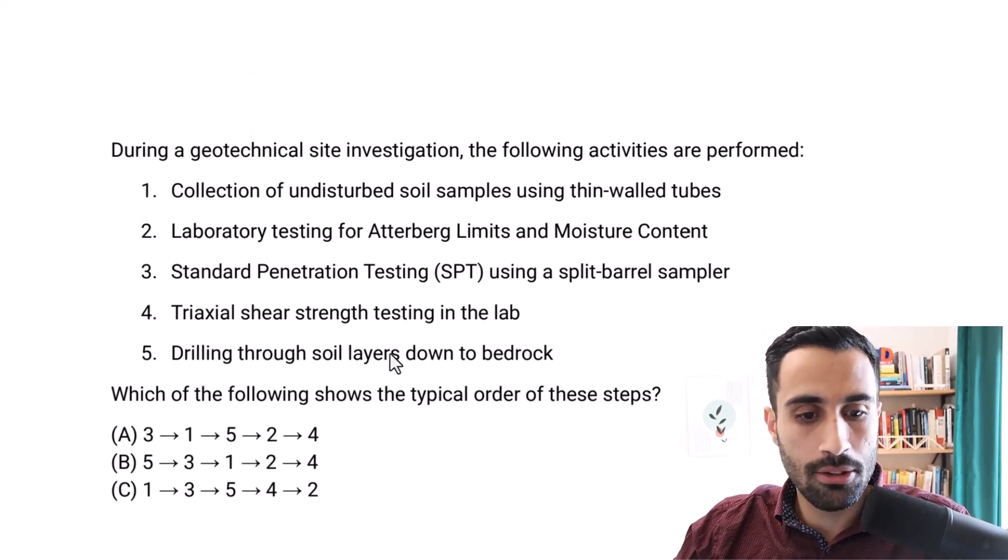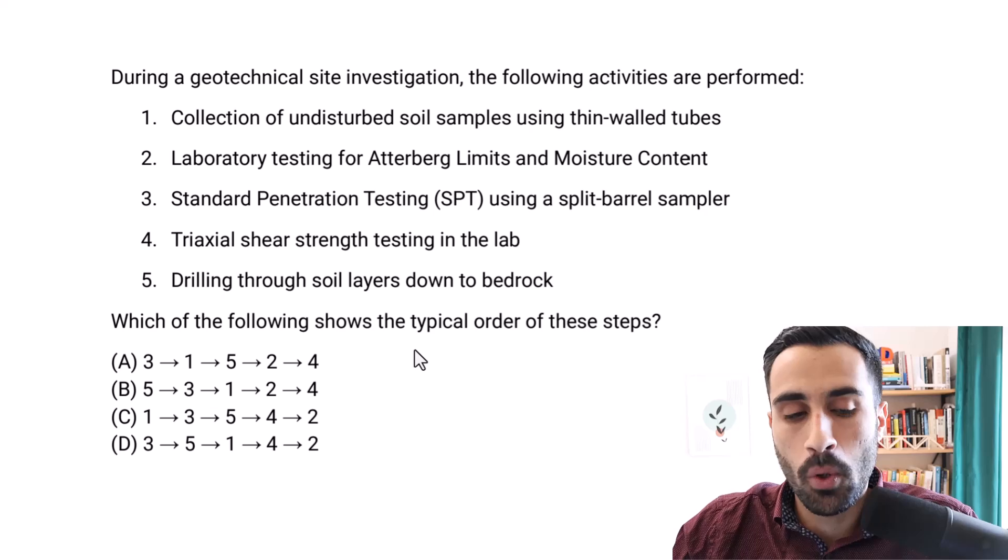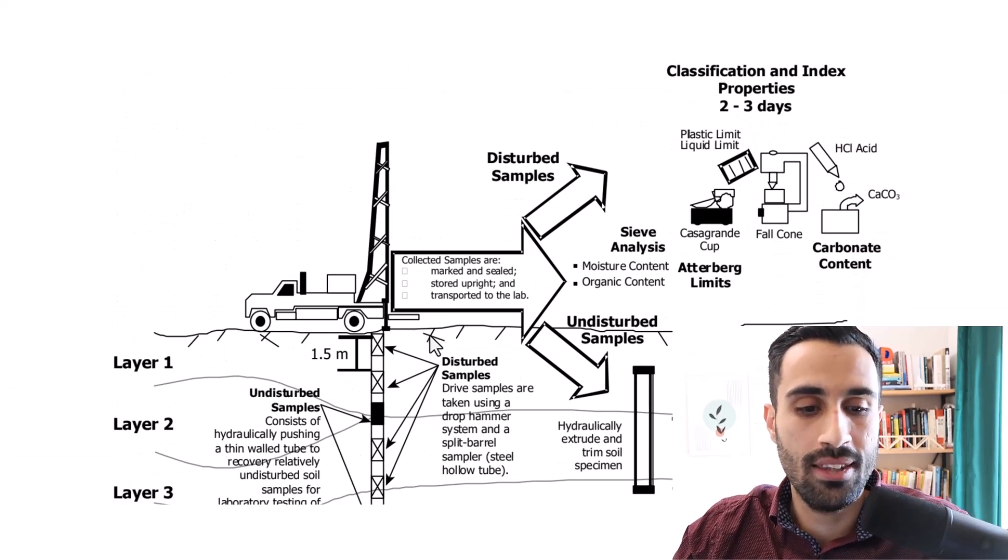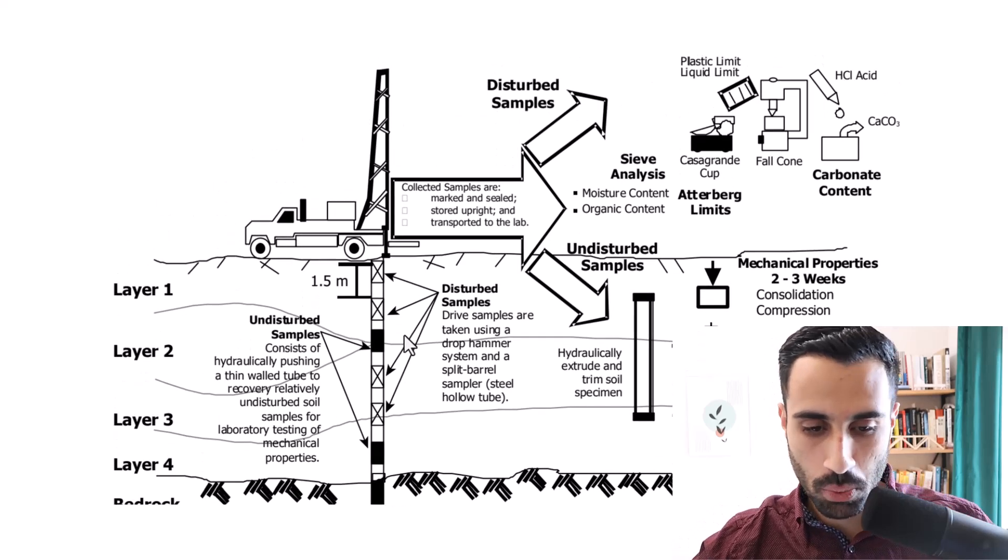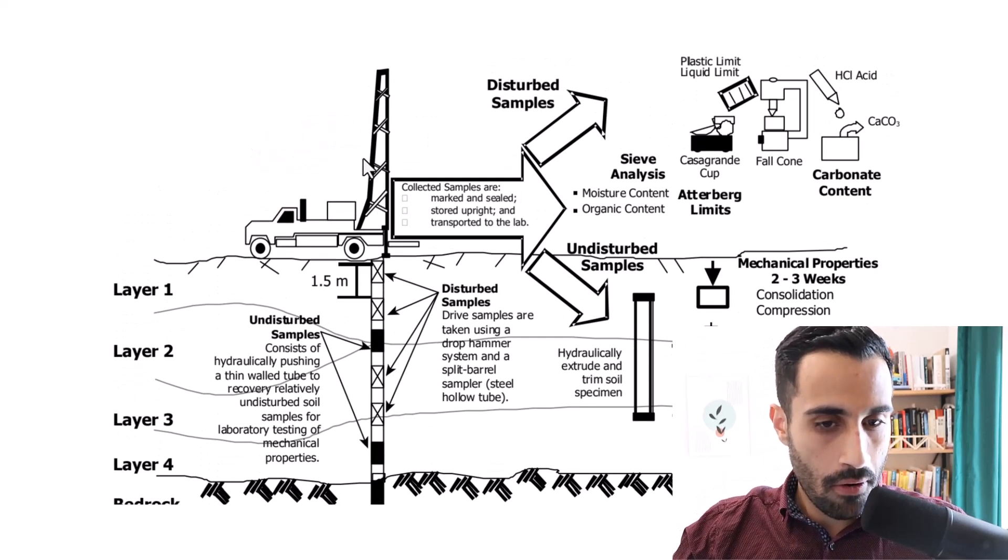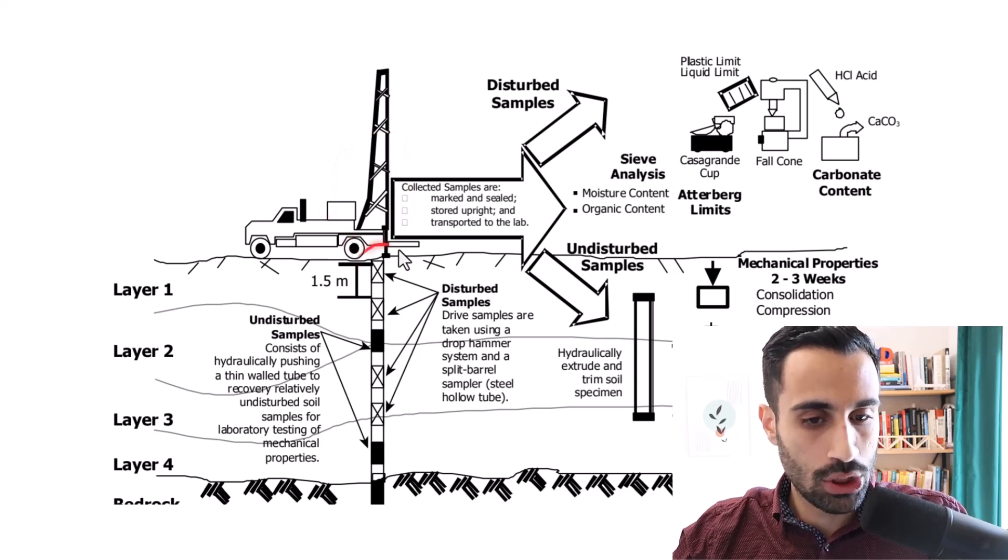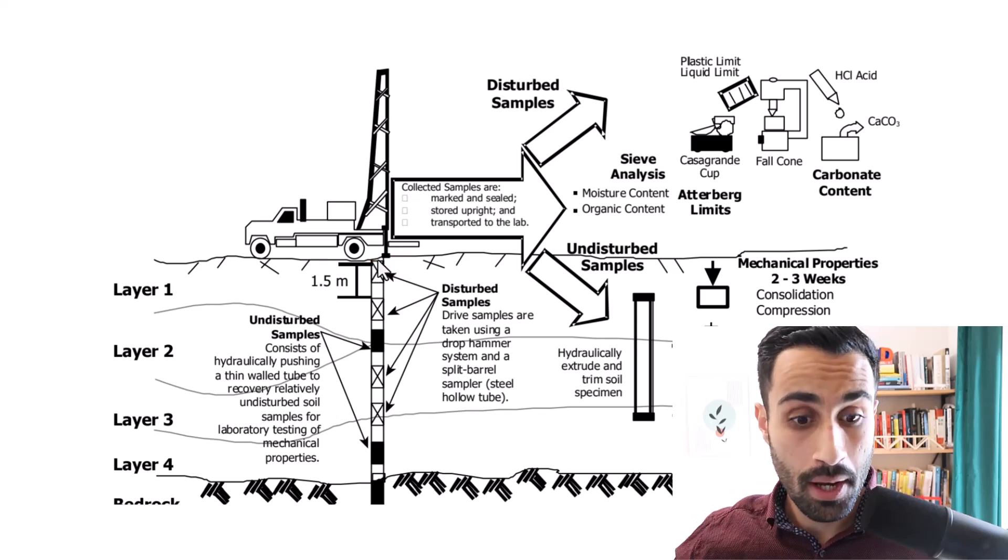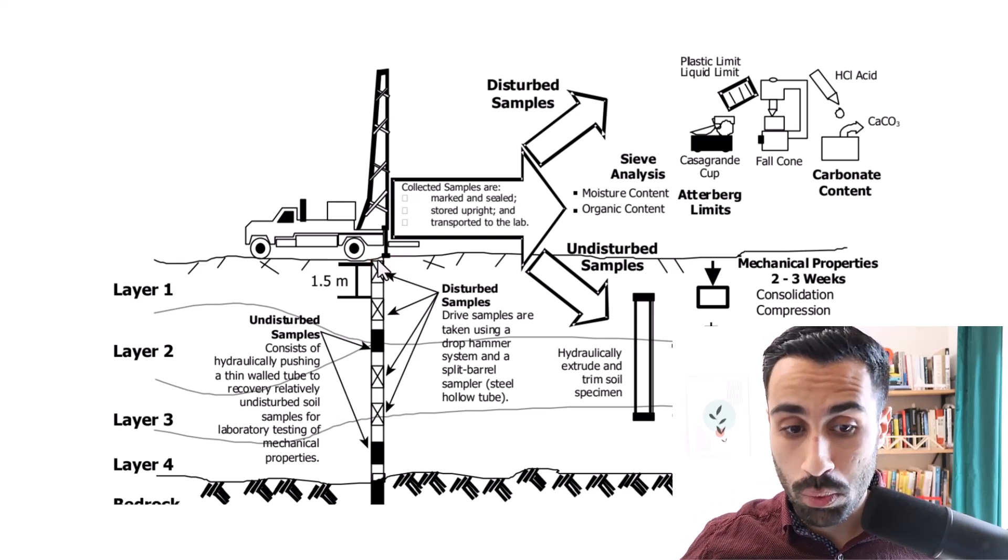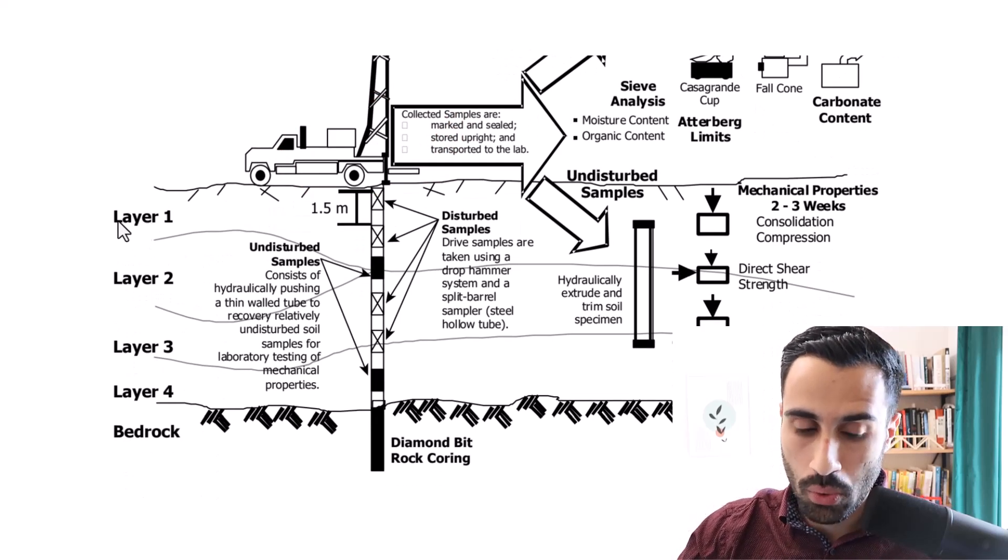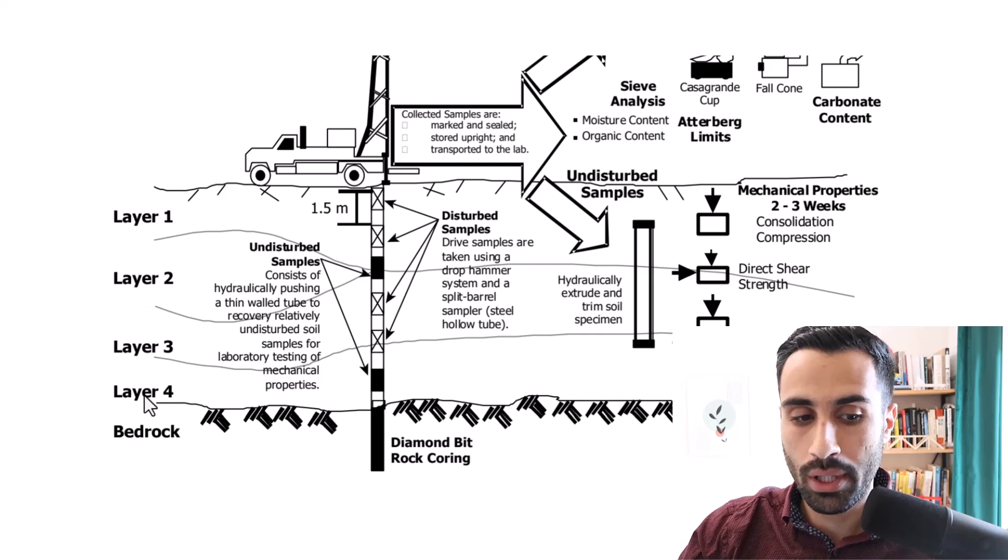So we will talk about this a little bit conceptually. There is a typical order that we will cover and I want to visualize that through this handy figure. So this is what we do. We take our truck with our drill rig, we drive this, we put it at the location we're interested in and we're going to drill. Then we're going to drill through the layers. So in this one it shows layer one through layer four. Then at the very bottom we hit bedrock.